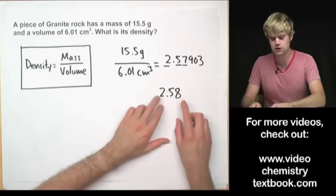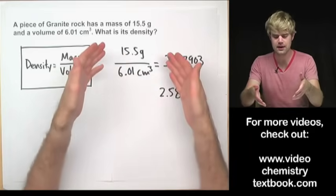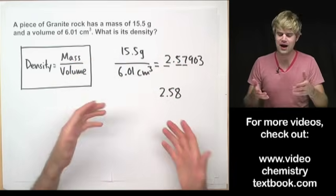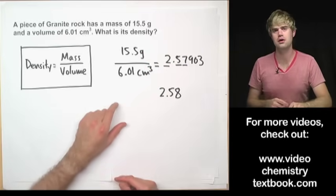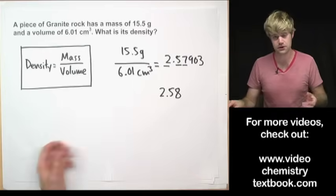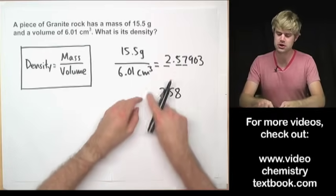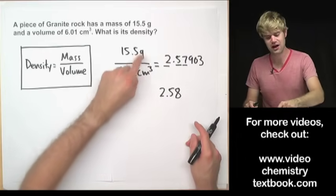Now what are the units here? What are the units for density? In this division problem I haven't canceled out any units. I have my grams and my cubic centimeters and nothing's happened to them. They're still both there, so that means that the units of my answer have to have both these in them.